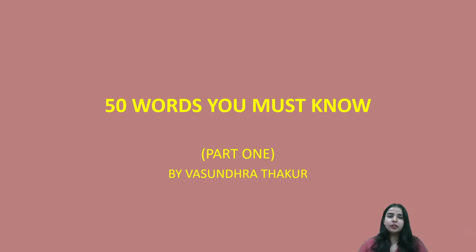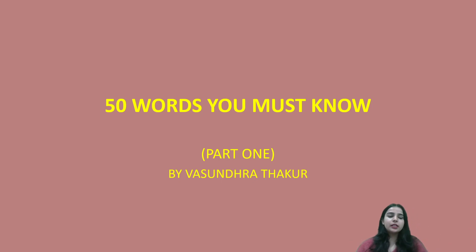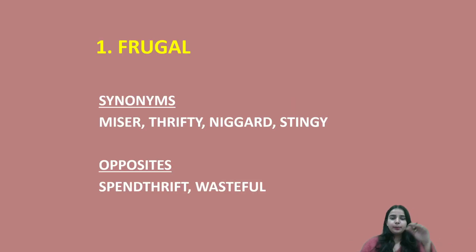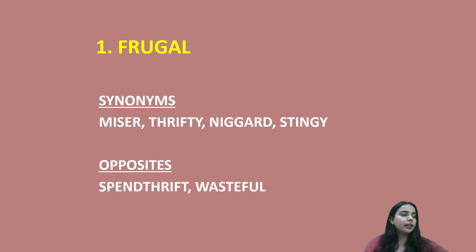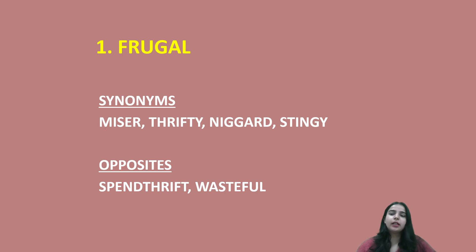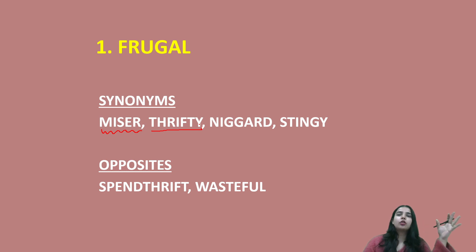So without further ado, let's begin. We will divide this whole series into parts. Let's look at the first set today: frugal. The first word we have is frugal, which means judicious or economical — somebody who likes to spend their money very wisely. So synonyms are: frugal, miser — miser means judicious — and thrifty, which means spending money in a very economical or judicious way.